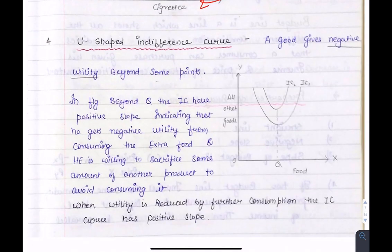The U-shaped indifference curve occurs when after a certain point, a good provides negative utility. As shown in this diagram, after point Q, the IC curve is upward sloping, representing that additional consumption is providing negative utility.